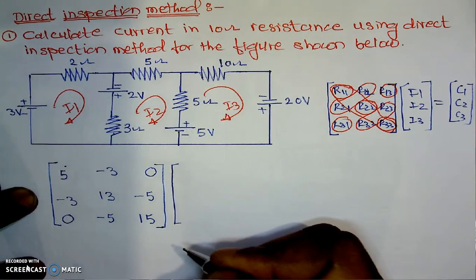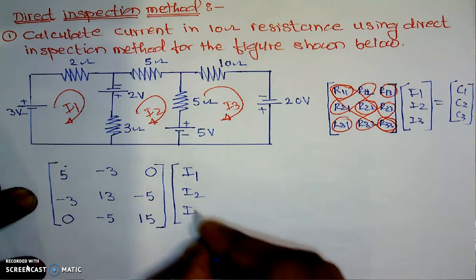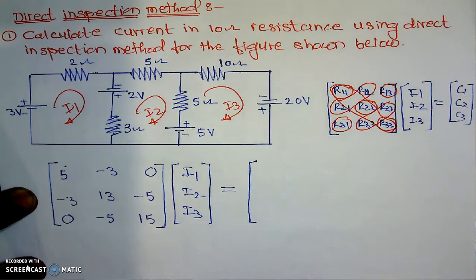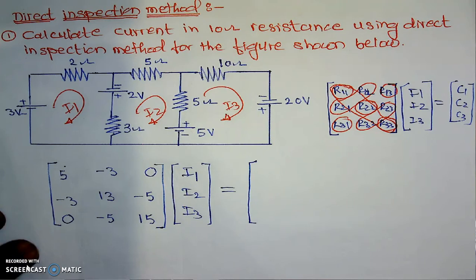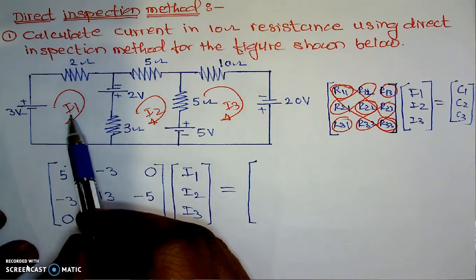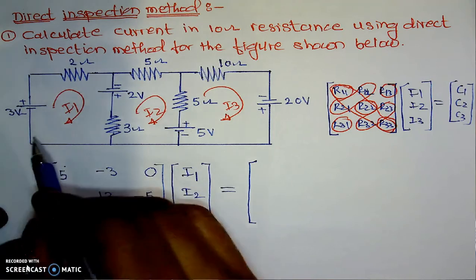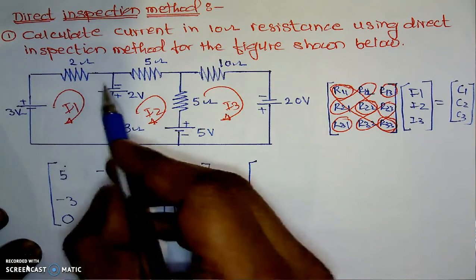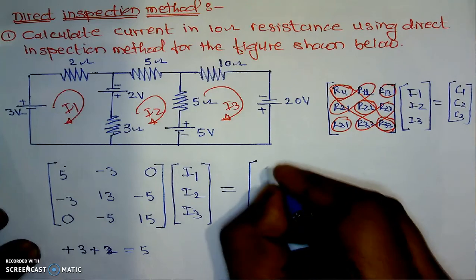It will hardly take a minute if we know the procedure. We have three currents I1, I2, and I3 as unknowns, equal to the constants C1, C2, and C3. To calculate C1: in this loop we travel with the direction of the current — clockwise. Travelling from negative to positive gives plus 3; then for the next battery, again negative to positive gives plus 2. So 3 plus 2 equals 5, meaning C1 equals 5.